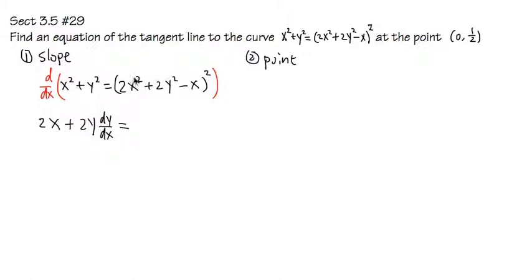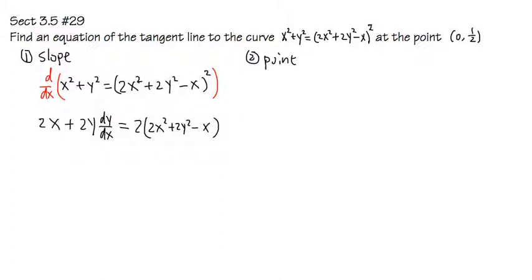And this is equal to the derivative of the right-hand side. Notice that we have one thing right here raised to the second power, so all we have to do is use the power rule first. Bring the power to the front, the inside will stay the same, and then subtract 1 from the exponent. So you write down 2x squared plus 2y squared minus x. Now you look at what's the inside function, which is this part.